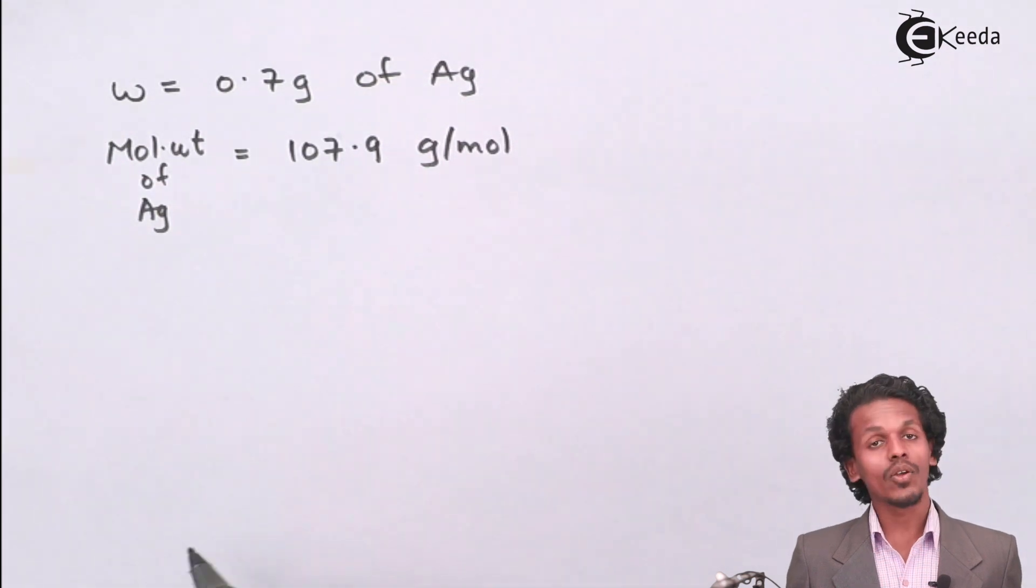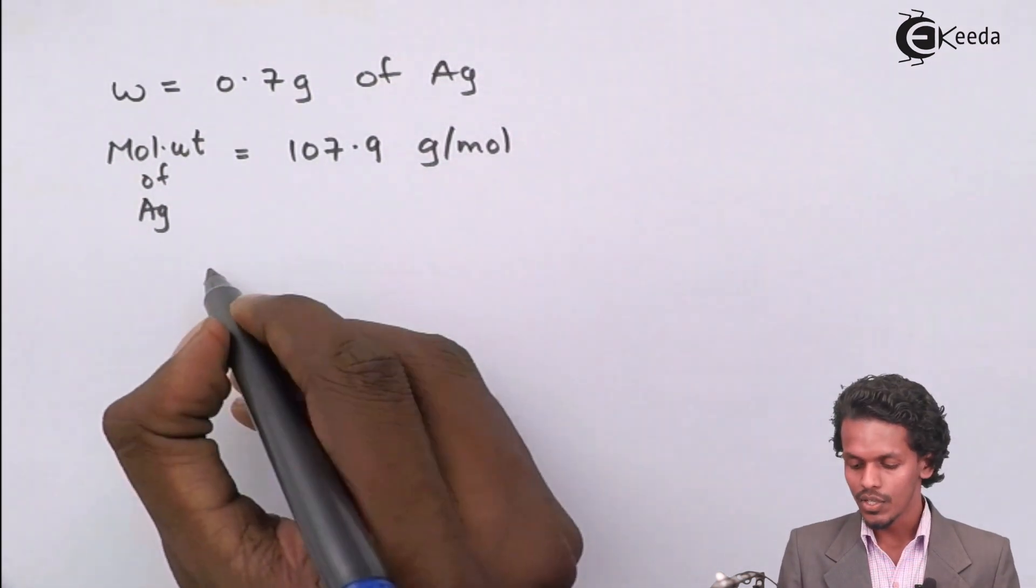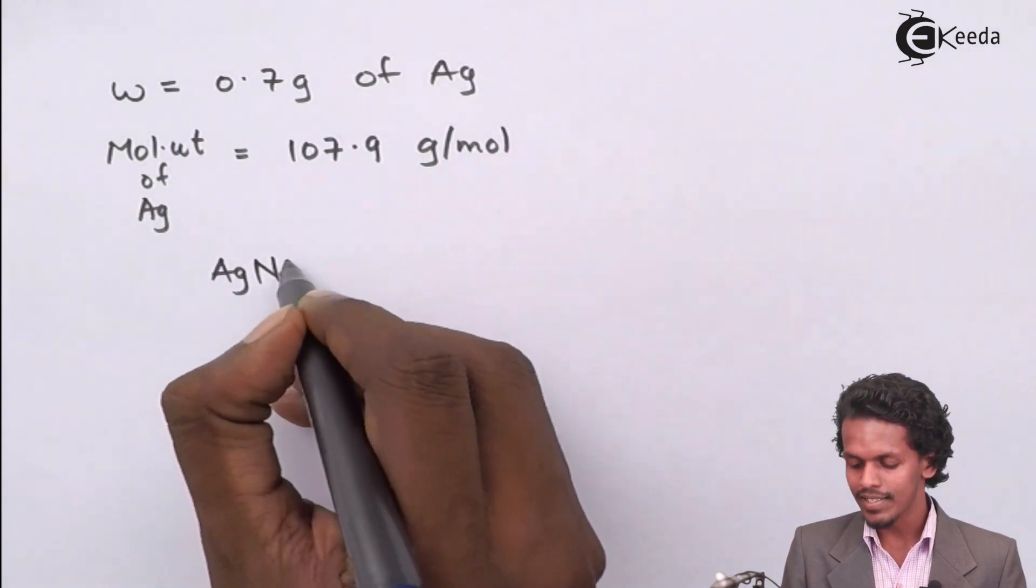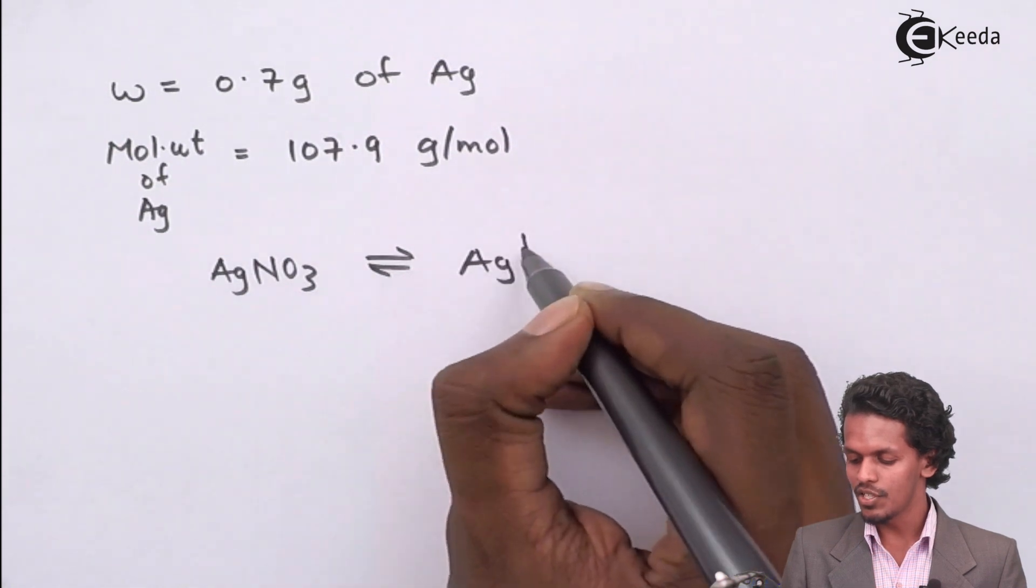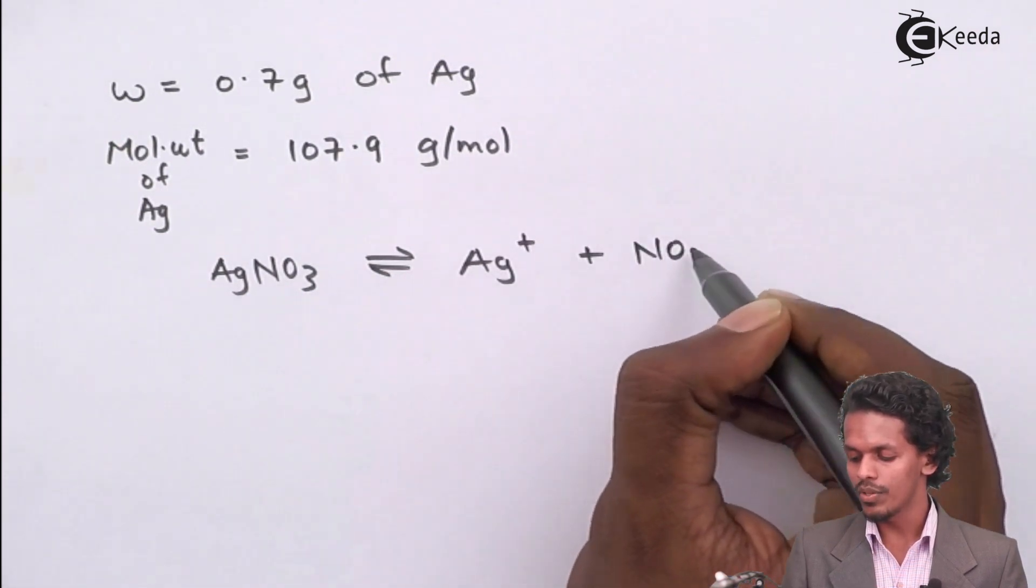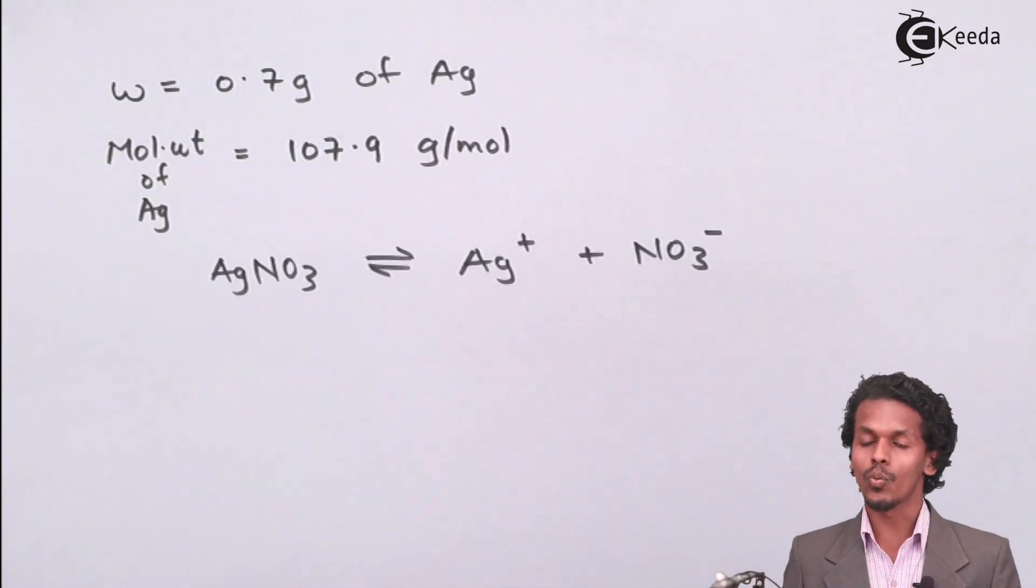The value of z we have to calculate. Because it is a solution of AgNO3, AgNO3 gets dissociated in the form of Ag+ plus NO3-. So the valency of Ag in this case is 1.